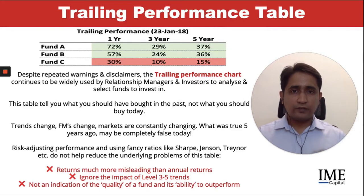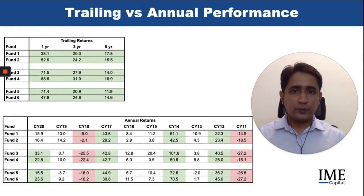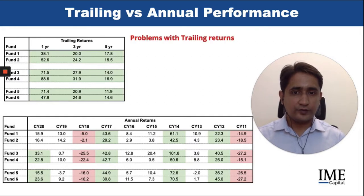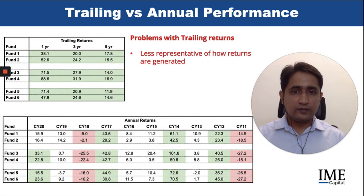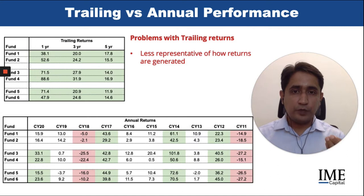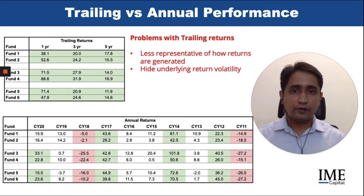Let's look at the first problem: the difference between a trailing and annual performance table. This is actual data of an actual set of funds. If you look at the trailing returns versus the annual returns, the trailing return table is much less representative of how returns are generated. It really hides the level of risk and volatility which is immediately apparent when you look at annual returns — it hides underlying return volatility.